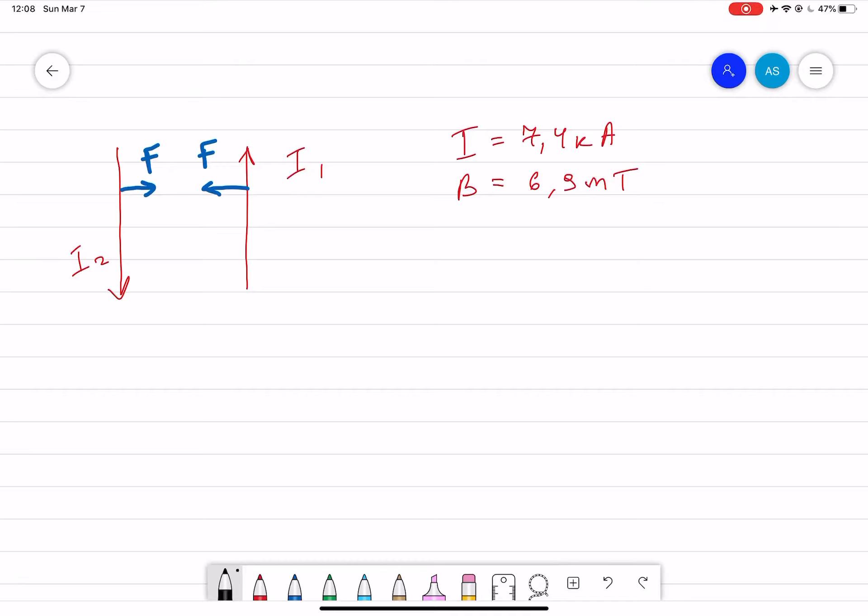there is attraction force and now we have to define what will be the direction of the magnetic field. Now using the right hand rule you can see that the magnetic field